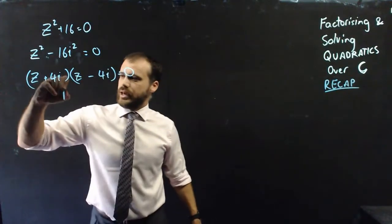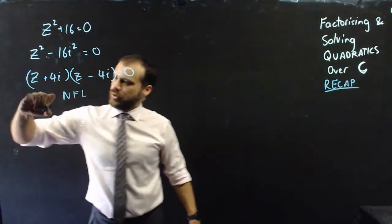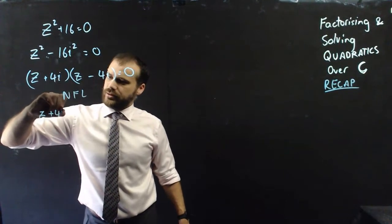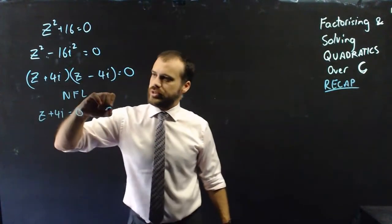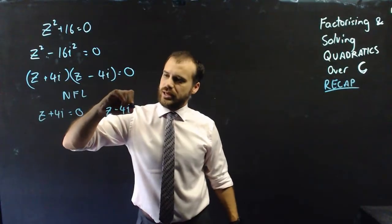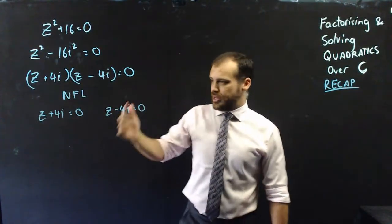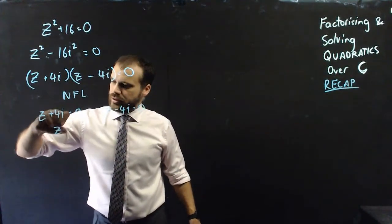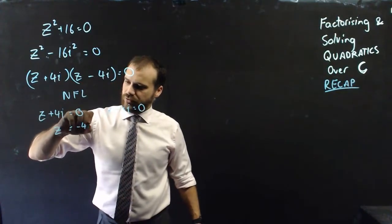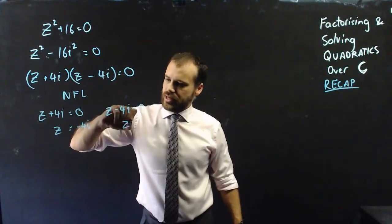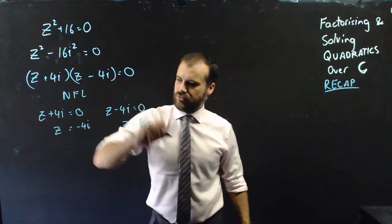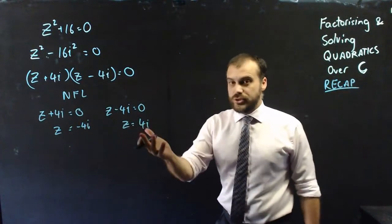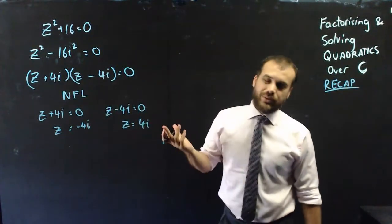After that, we can solve it using our null factor law, which says that this bracket must equal 0, or this bracket must equal 0. And if you rearrange it, you'll get z = -4i and z = +4i. And there are my two solutions to z² + 16.